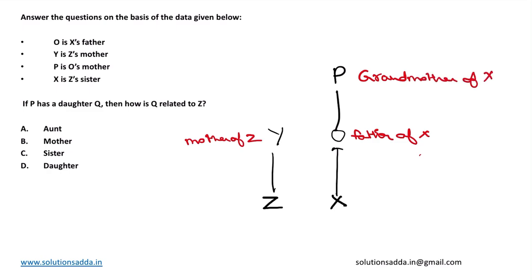Now X is Z's sister. X is Z's sister, so Z is brother of X.